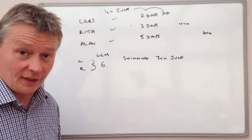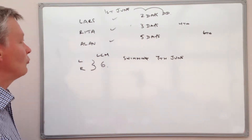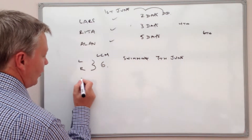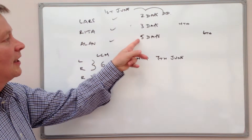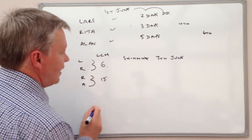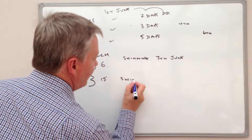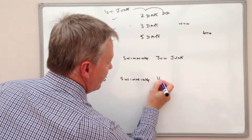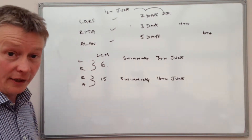Part B asks on what date will Rita and Alan next go swimming together. It's a similar sort of question — we're looking for the lowest common multiple of 3 and 5, which is 15. So Rita and Alan, the next time they go swimming together will be 15 days from the 1st of June, which is going to be the 16th of June.